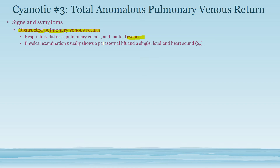Physical exam shows a parasternal lift and a single S2 second heart sound. The parasternal lift occurs because the right side of the heart is getting most of the circulation and preload, leading to right ventricular hypertrophy that pushes forward the sternum. You also get a single loud second heart sound because the right side of the heart has more pressure and more blood, causing a louder sound on the right side versus the left.